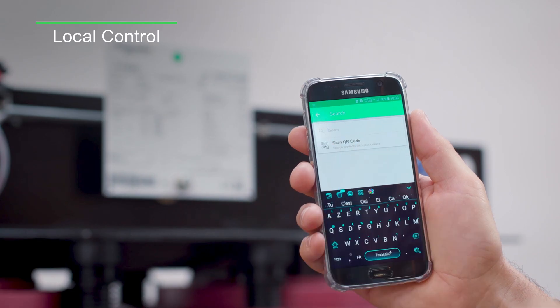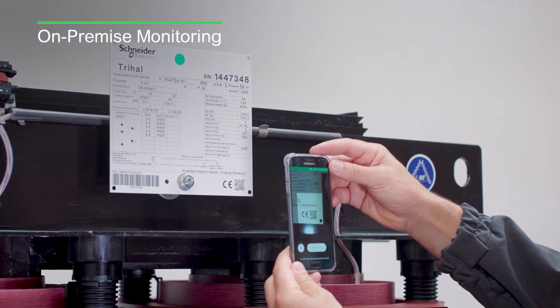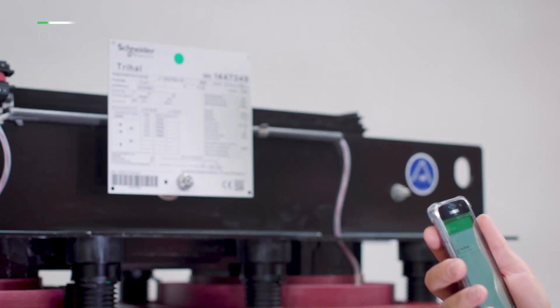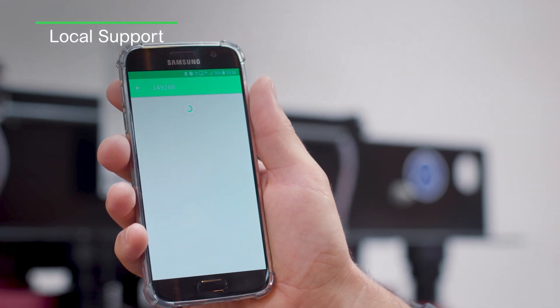Our eco-structure ready MV range have a QR code on the front of the product. This code can be scanned via the My Schneider app to access technical documentation, support and FAQs on that specific product right on your smart device or phone.